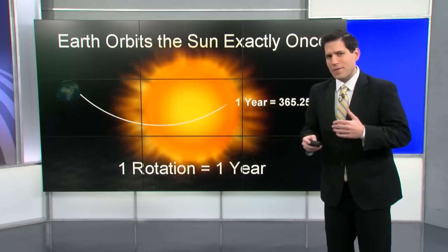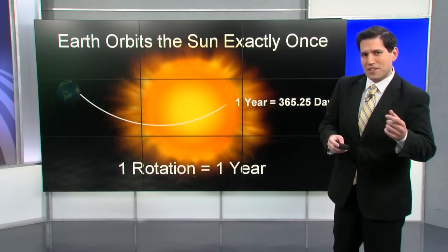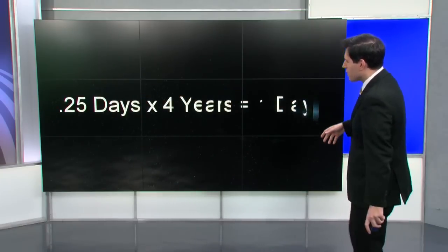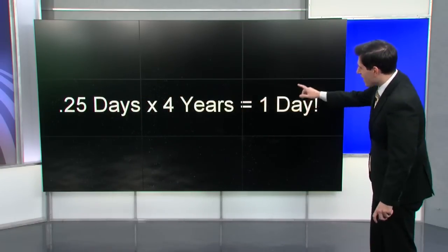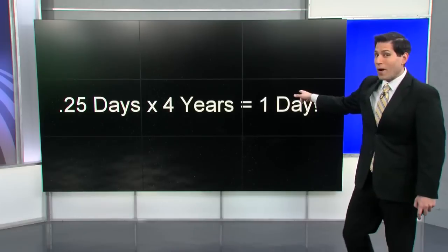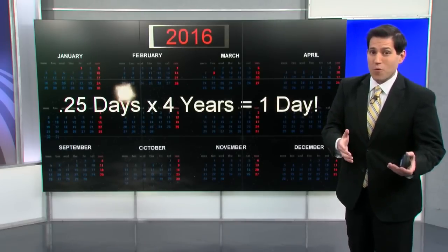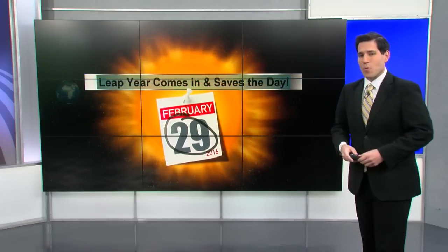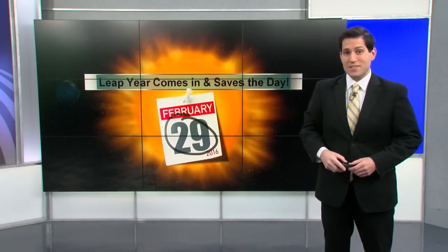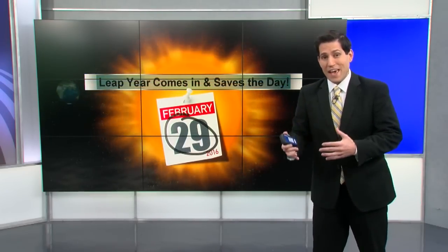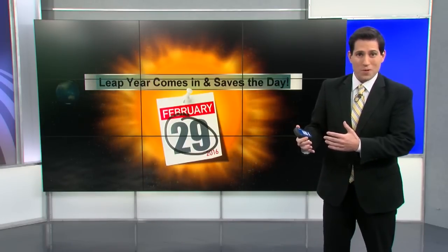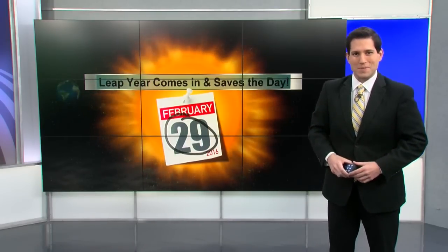So every year that we go around the sun actually takes us a quarter of a day extra. As you can see where I'm going with this: 0.25 days times four years equals one day. So every four years we get ourselves a leap day, typically added on to the end of February. Leap year comes in to literally save the day and make up for those quarter days that we pick up every four years. That is why we have leap day.